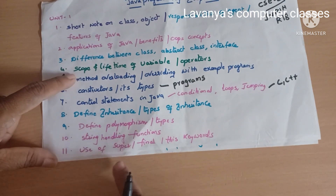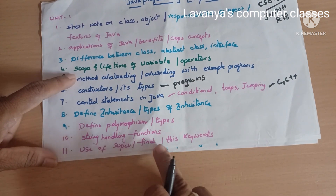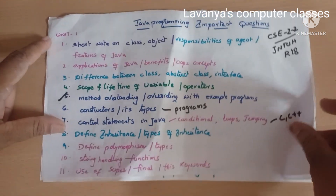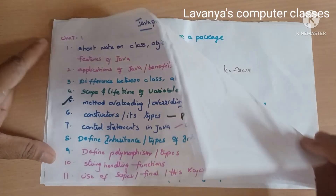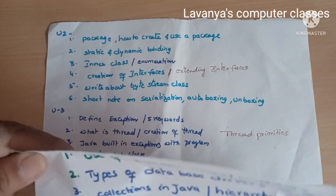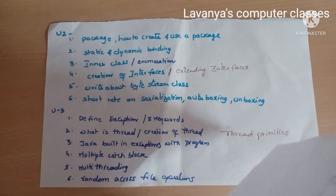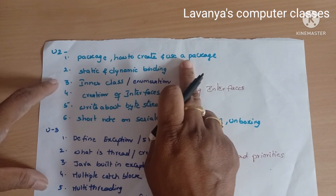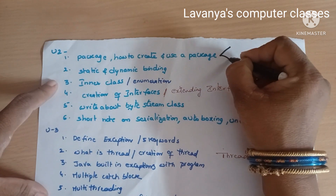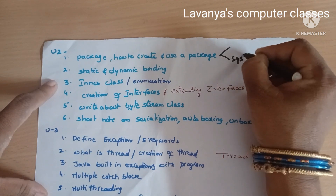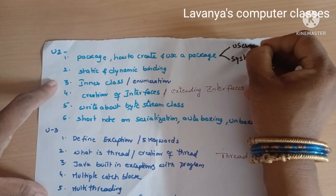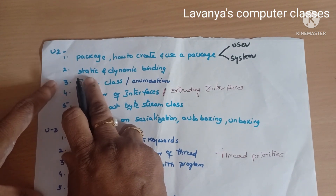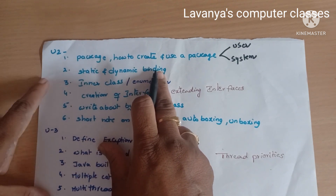Some important keywords to study are: super, final, this — what is the use of these keywords, with syntax and a simple example program. Moving to Unit 2: packages — what is a package, how to create one, system-defined packages, user-defined packages, API packages, and explain static and dynamic binding like polymorphism.